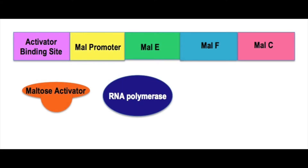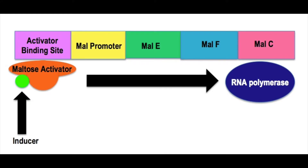In the maltose operon, the lack of an inducer prevents the binding of both the activated protein and the RNA polymerase, meaning transcription cannot occur. When an inducer molecule attaches to the activator protein, it can then bind to the activator binding site. In this operon, the inducer is the sugar maltose and the activator protein is MalT. The RNA polymerase is then able to bind to the promoter and transcription can take place.